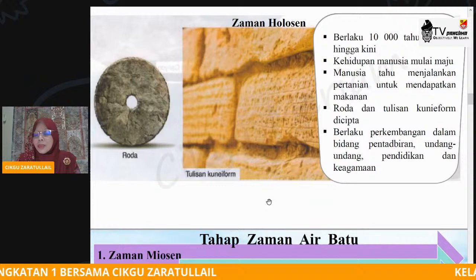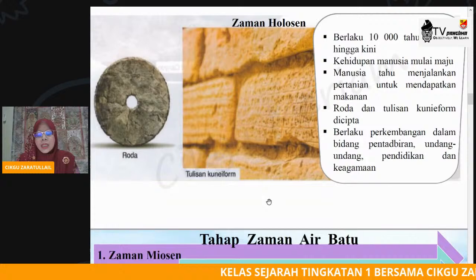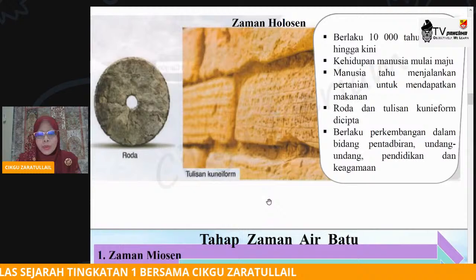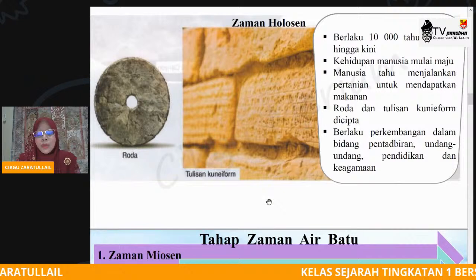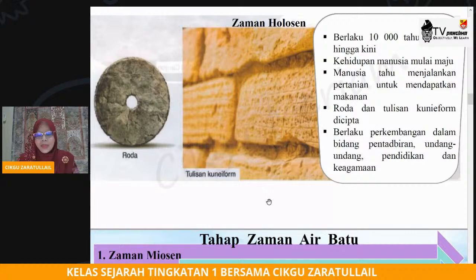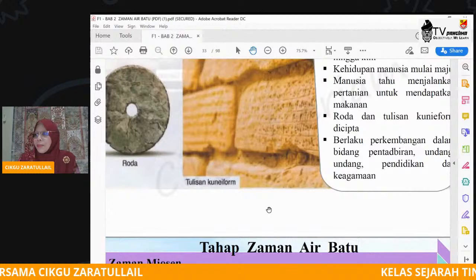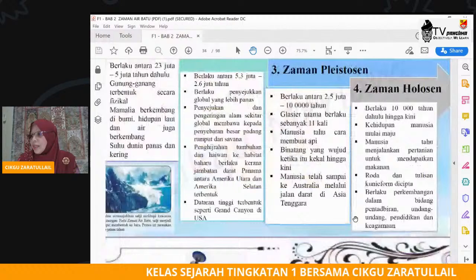Cikgu berikan sedikit gambaran kepercayaan animisma itu — mereka percaya bahawa sesuatu perkara itu ada ruh. Jenazah yang sudah mati itu mempunyai ruh ataupun kuasa. Begitu juga mereka percaya bahawa unsur alam itu mempunyai kuasa. Itu kepercayaan animisma sebelum sampainya ajaran-ajaran agama yang lain.